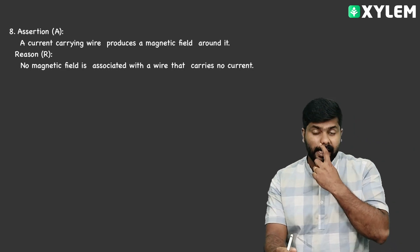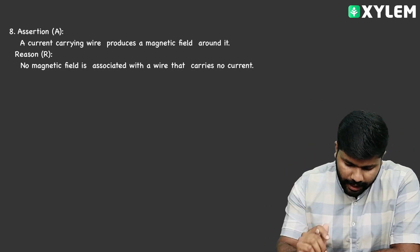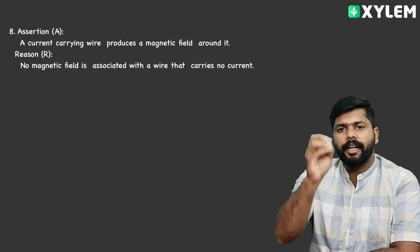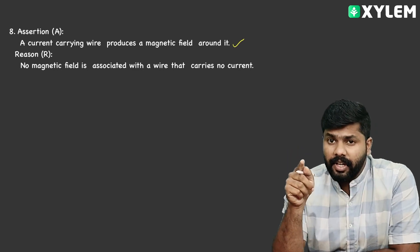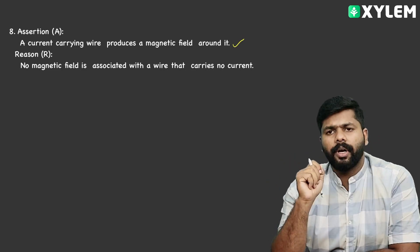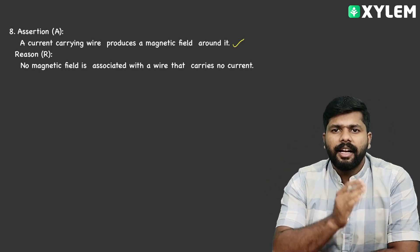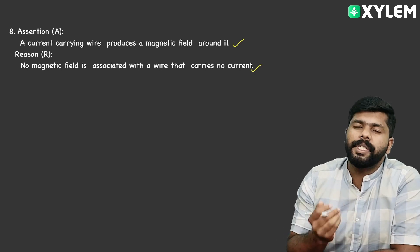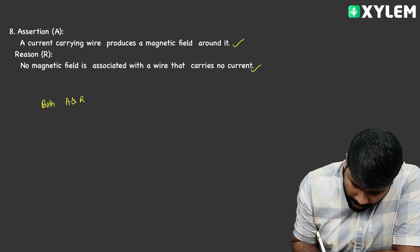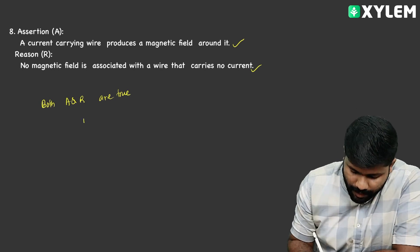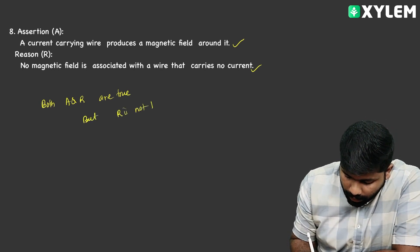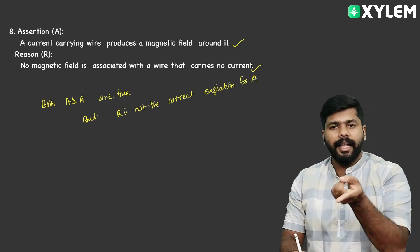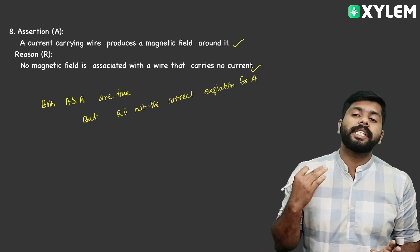Assertion-Reason question: Assertion — a current carrying wire produces a magnetic field around it. This is correct, from Chapter 3. Reason — no magnetic field is associated with a wire that carries no current. Both A and R are correct, but R is not the correct explanation for A. So the answer is that option.